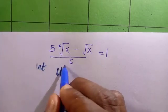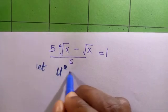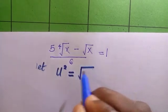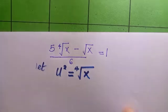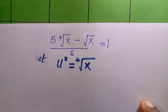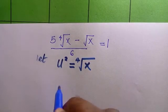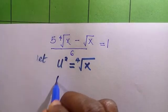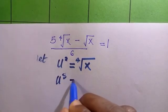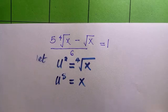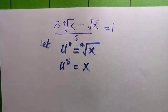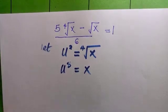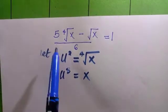Let u² equal the fourth root of x. By raising both sides to the power of four, we get u to the power of eight equals x.